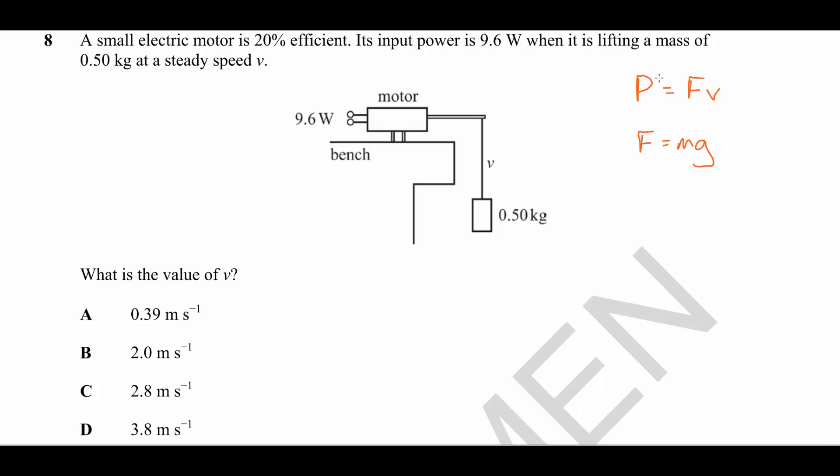A common error in this question would be to use 9.6 watts as the power. Now that is the electrical power going into the motor. It is not the power being supplied by the motor to lift. We can see the motor is 20% efficient, so only 20% of that input power will become output power. So P out is equal to 9.6 multiplied by 0.2, which is 1.92 watts. That is the value of power that we need to use in our equation.